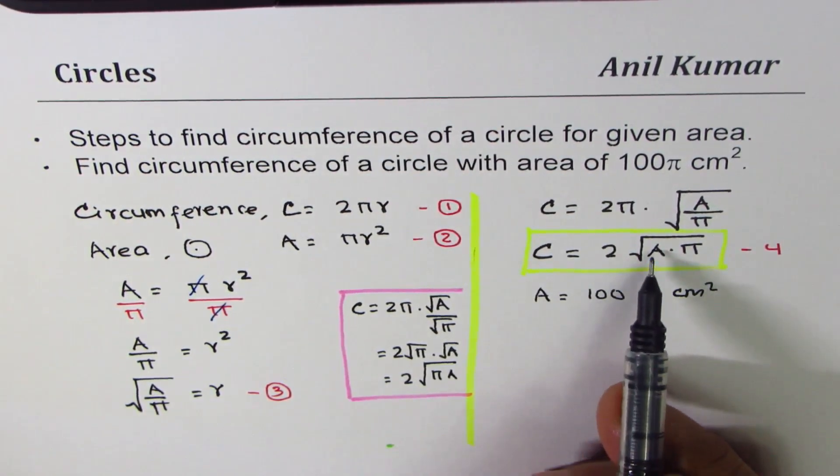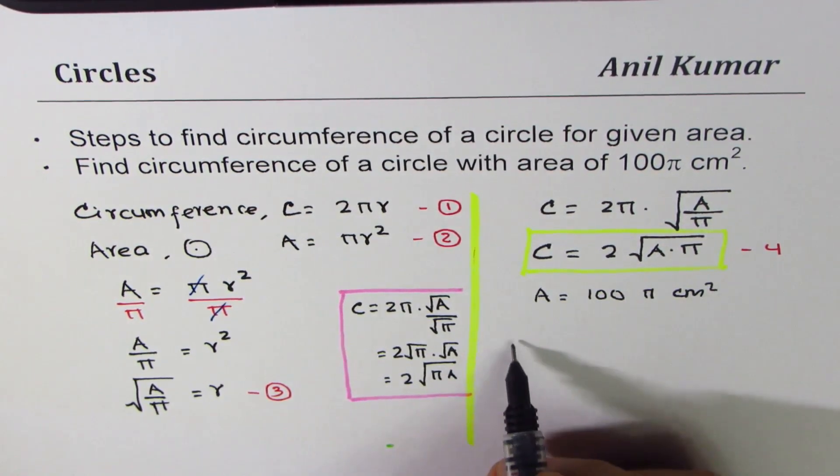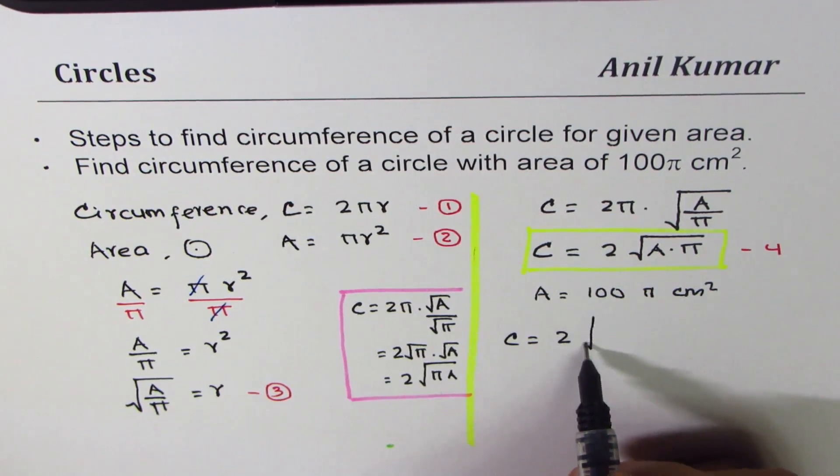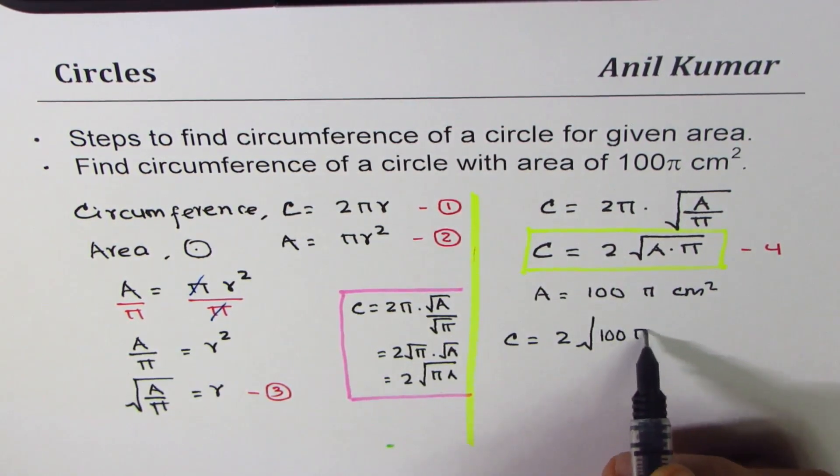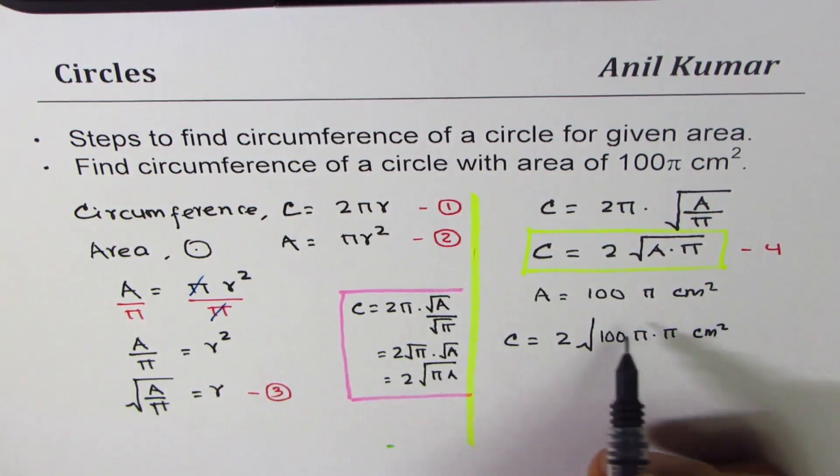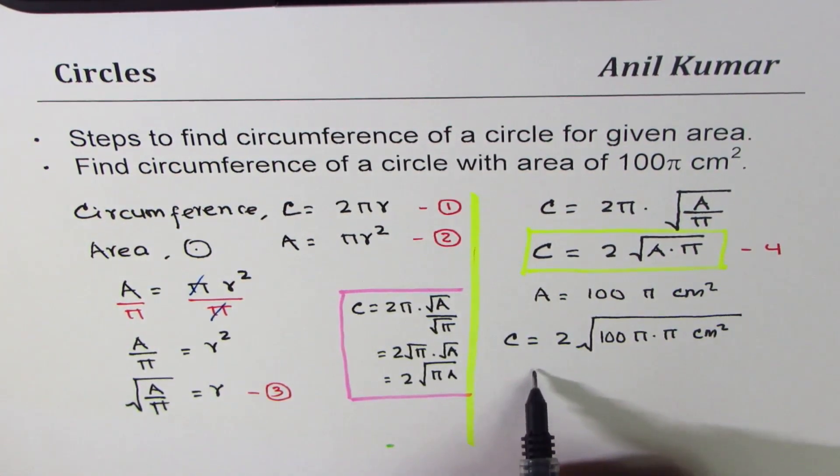So we'll replace A with 100π centimeter square. So we get c as equal to 2 times square root of 100π. We already have a π here. So we'll multiply by π. Let's take centimeter square over the square root. So you'll also understand how the units get transformed.